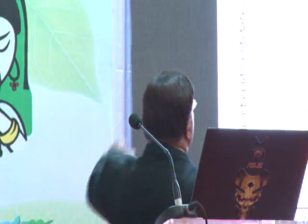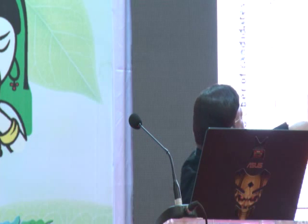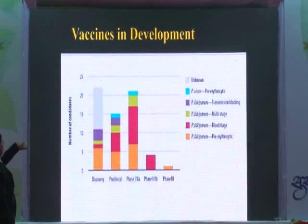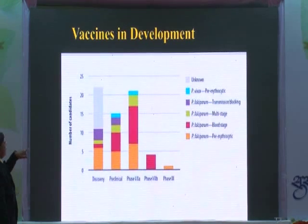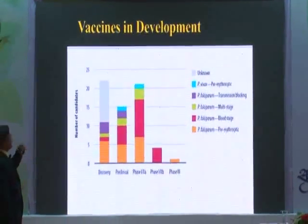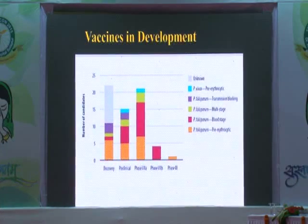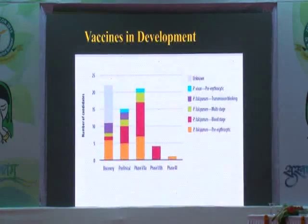Vaccines in development — I have already mentioned 20 subunits are available. WHO, on 25th April 2012, announced the rainbow effect. Blue is Plasmodium vivax pre-sporozoite. Gray is unknown. Green is Plasmodium falciparum multi-stage. Red is Plasmodium falciparum blood stage. Yellow is Plasmodium falciparum pre-sporozoite. There are so many vaccines in this pipeline.